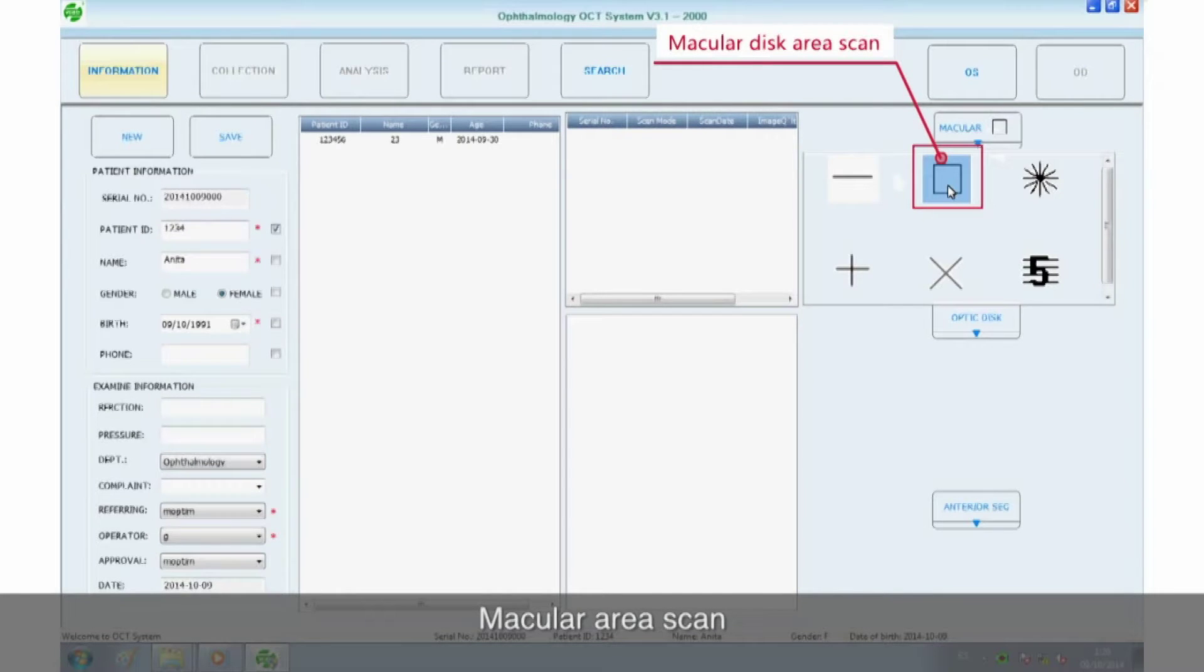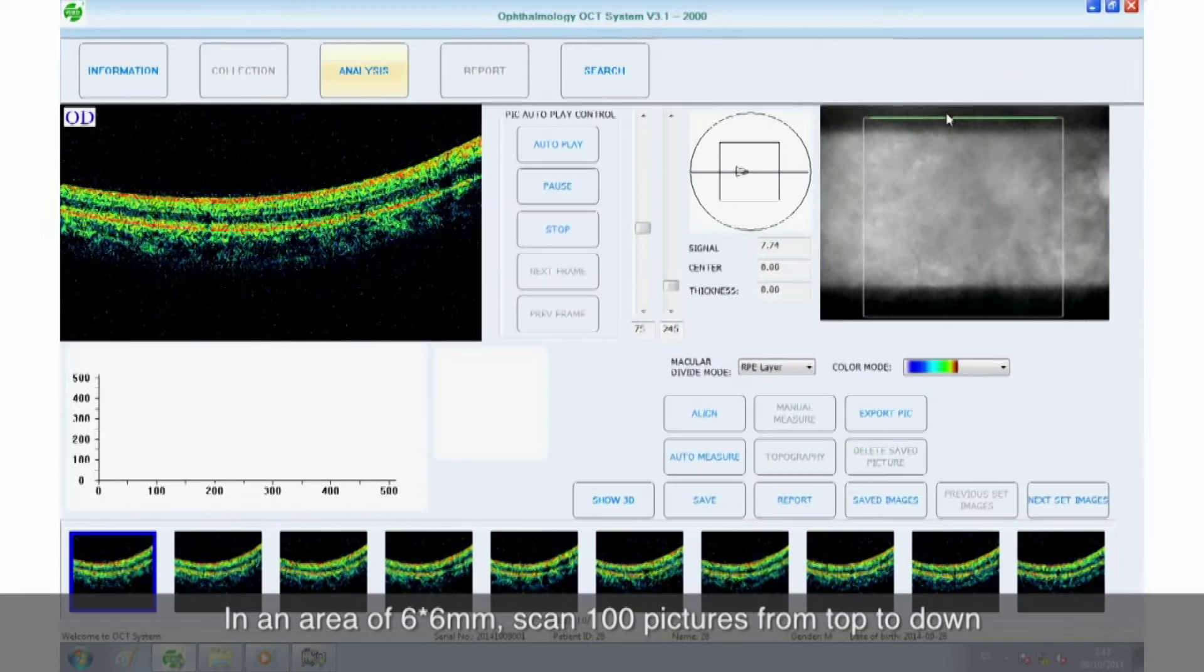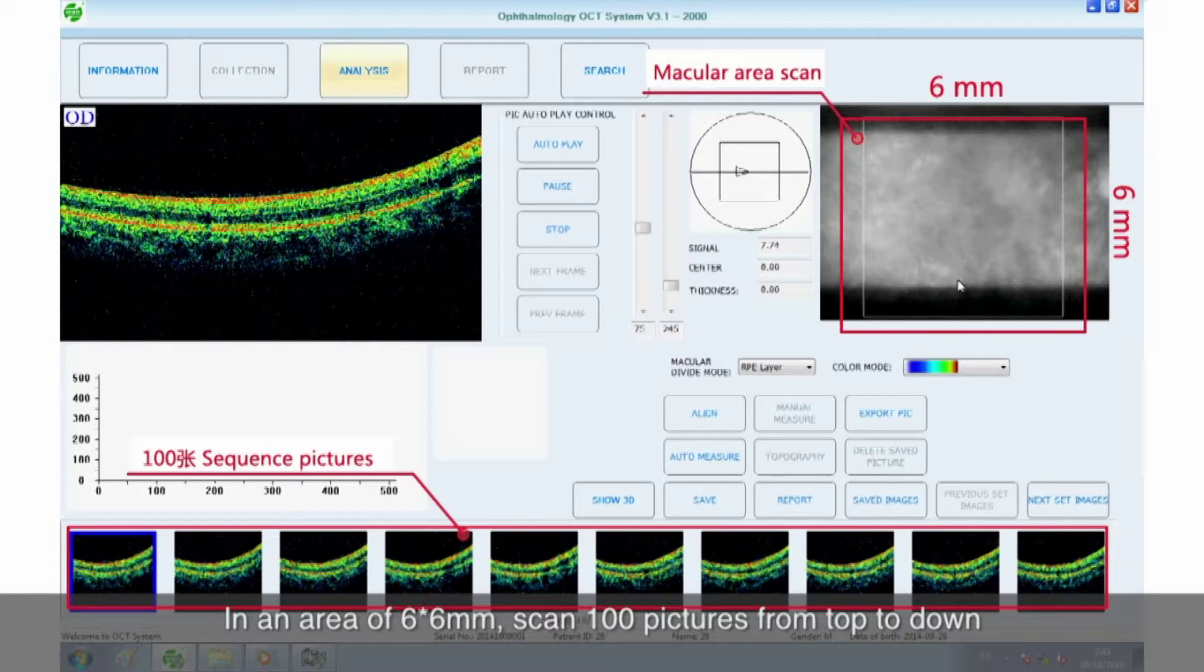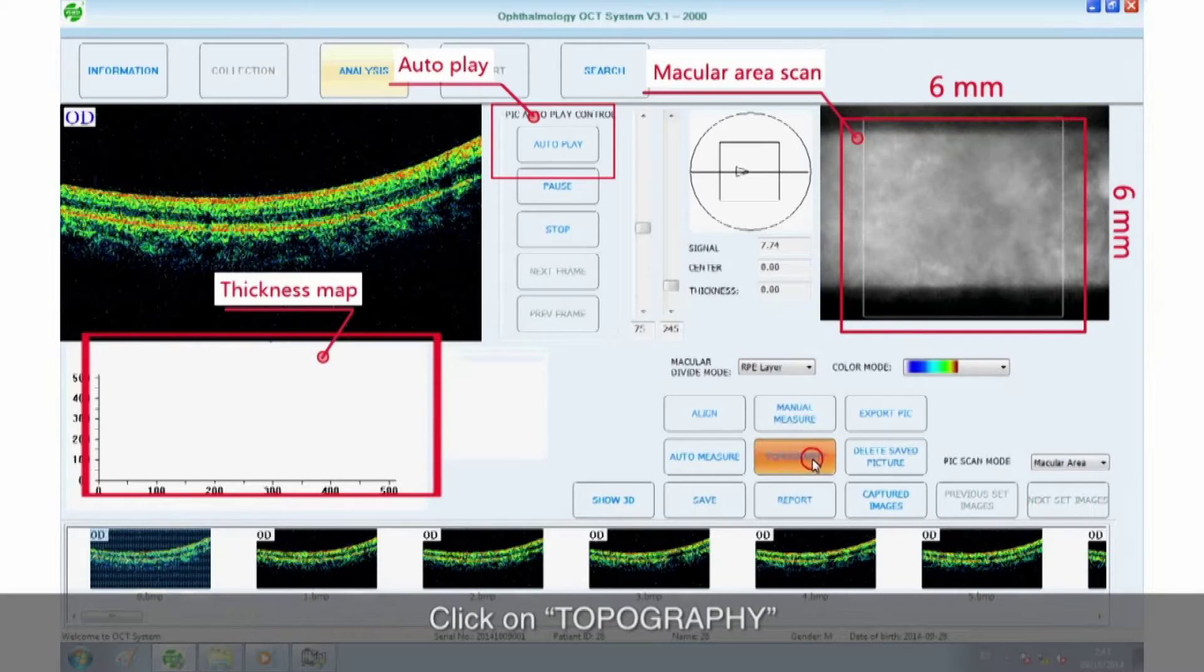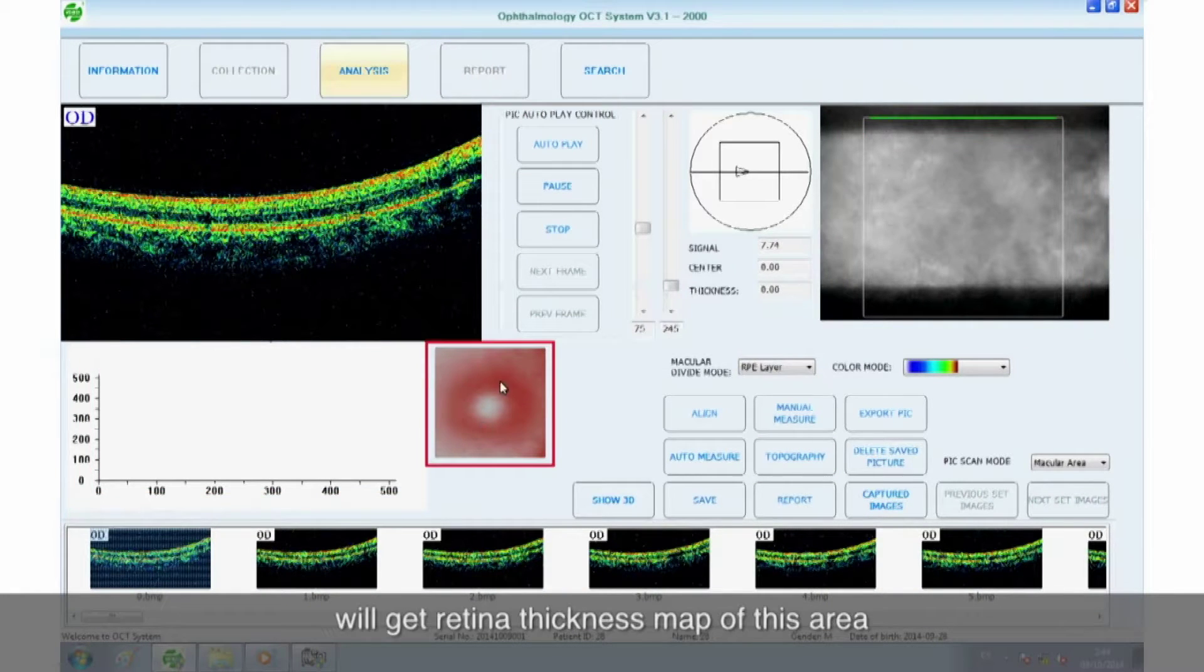Macular area scan. In an area of 6 by 6 millimeters, scan 100 pictures from top to down. Click on topography. We'll get retina thickness map of this area.